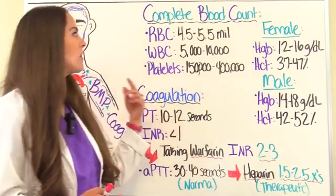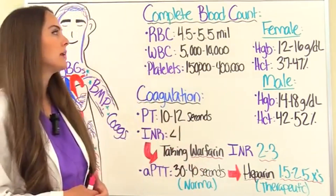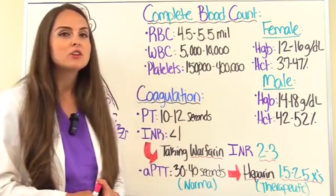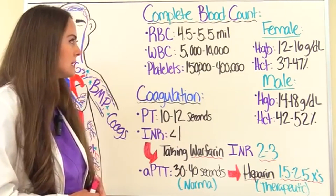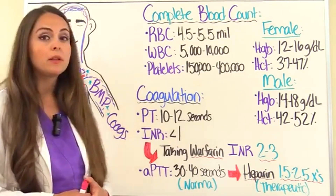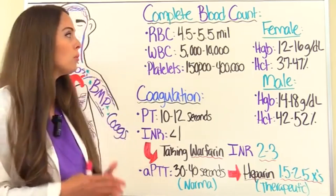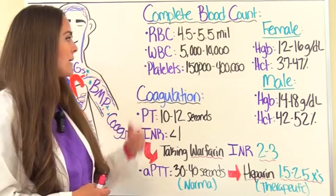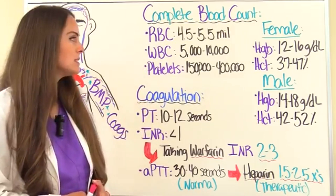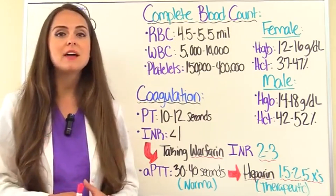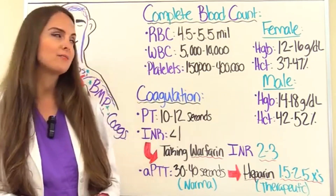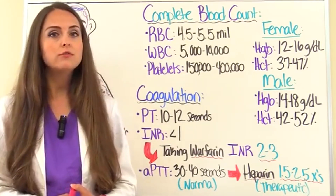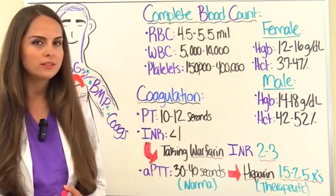Let's start talking about the complete blood count, the CBC. This tells us about the cells in our blood. A normal RBC range is 4.5 to 5.5 million. For white blood cells, WBCs, it should be 5,000 to 10,000. For platelets, it should be 150,000 to 400,000.